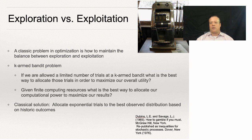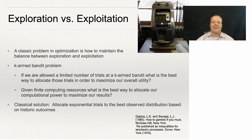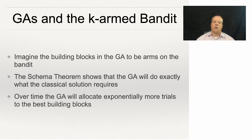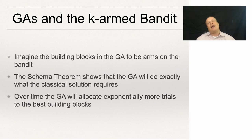The classical solution was discovered by Dubins and Savage in a book they republished as Inequalities for Stochastic Processes — though I love the first title, which is How to Gamble if You Must. Dubins and Savage showed that the best solution is to allocate exponentially more trials to the best observed distribution based on historic outcomes. In other words, as certain solutions become better, you should allocate more and more resources to those. That's essentially what the GA is doing. There's something called the schema theorem which shows that the GA will allocate increasingly more resources to the best solutions it has so far discovered.